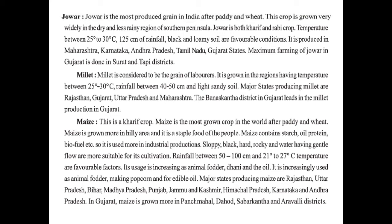Rainfall between 50 to 100 cm and temperature of 21 to 27 degree Celsius are favorable factors. Its usage is increasing in animal fodders, ghani oil, making popcorns, and for edible oil. Major states producing maize are Rajasthan, Uttar Pradesh, Bihar, Madhya Pradesh, Punjab, Jammu and Kashmir, Himachal Pradesh, Karnataka, and Andhra Pradesh. In Gujarat, maize is more grown in Panchmahal, Dahod, Sabarkantha, and Aravalli districts.